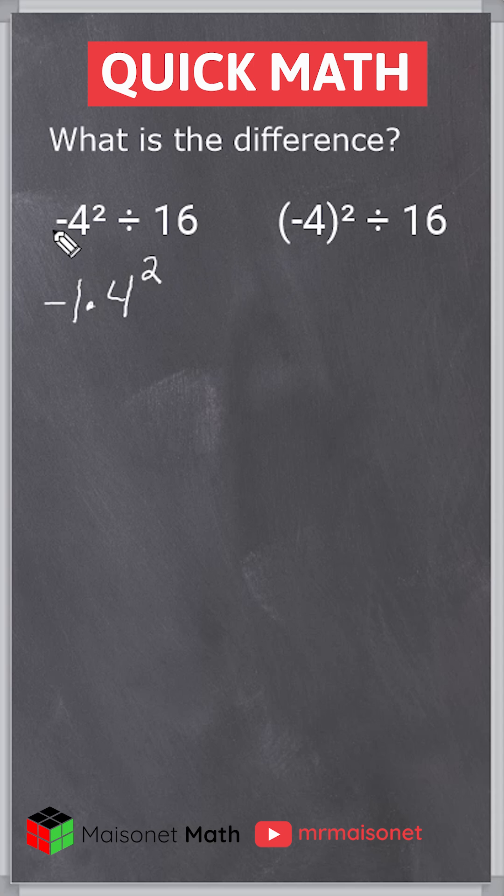So negative 4 to the second power divided by 16, we should rewrite as negative 16 divided by 16, which is equal to negative 1.